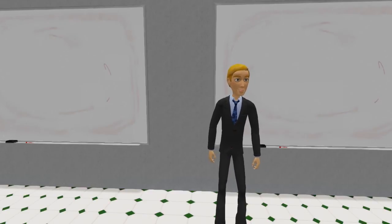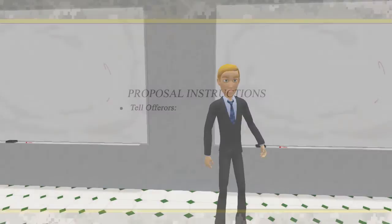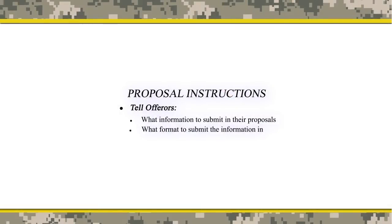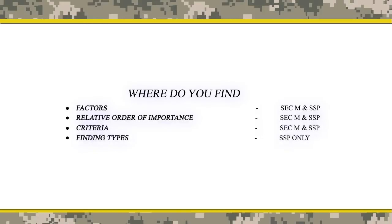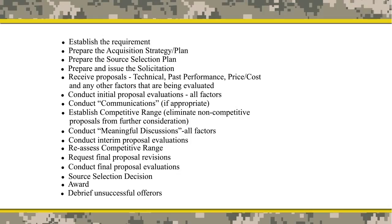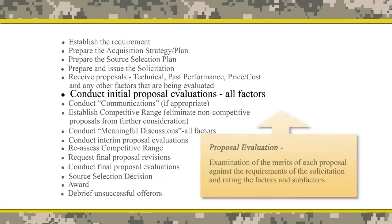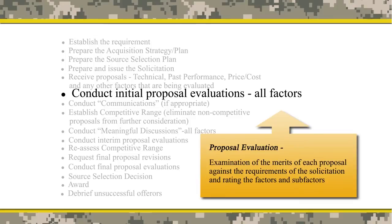Finally, we have the proposal instructions, which inform offerors what information to submit in their proposal and how the information should be formatted. Once planning is complete and the SSP is finalized, a solicitation is prepared. Portions of the SSP are incorporated into Sections L and M of the solicitation. When ready, the solicitation is issued to industry and, in response, proposals are received. An initial evaluation, broken out by the evaluation factors and sub-factors, is then conducted on each proposal relative to the requirements of the solicitation. As part of this process, the strengths, weaknesses, and deficiencies of the proposal are identified and a resultant rating is assigned.